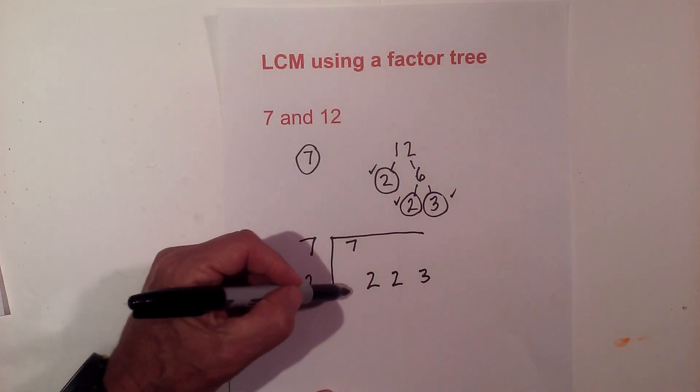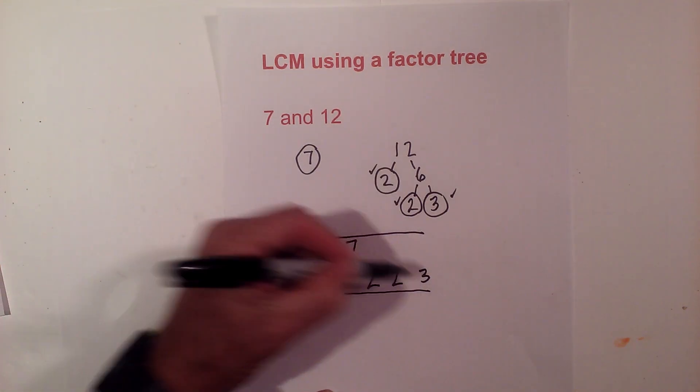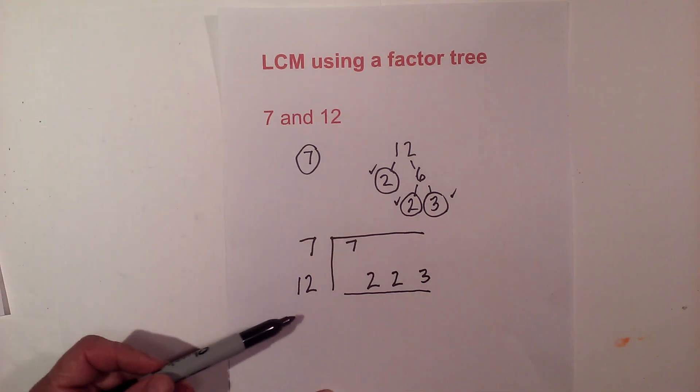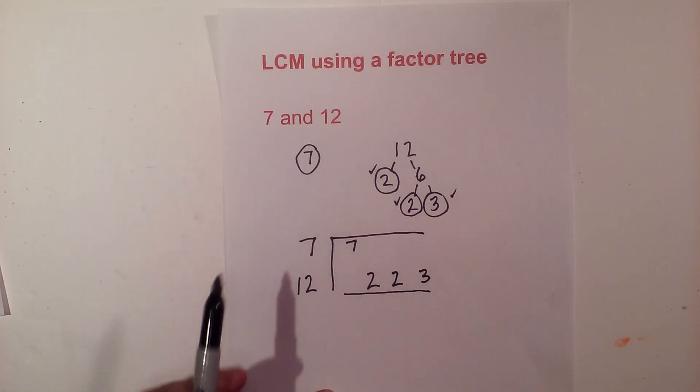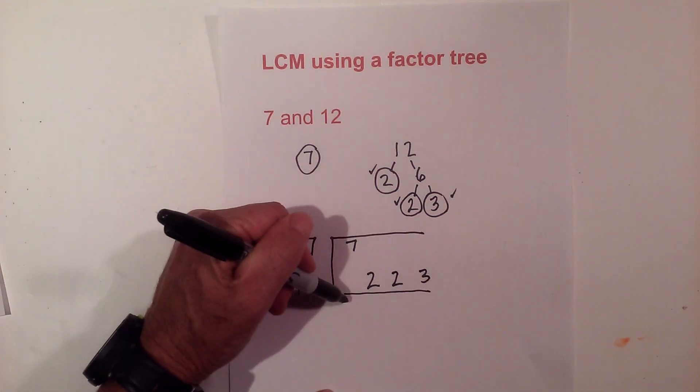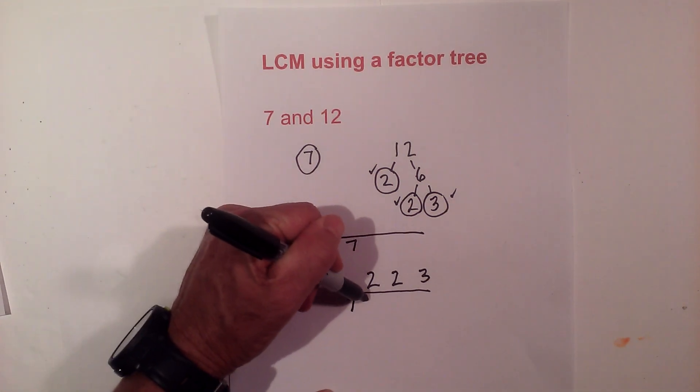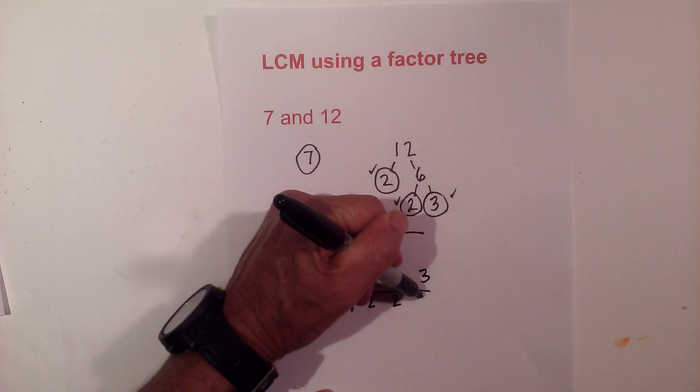Now I multiply all the factors together. If I happen to have a vertical pair, I would only bring one of these down. So with no vertical pairs, I have 7, 2, 2, and 3. Now I multiply these together.